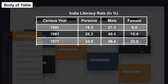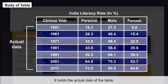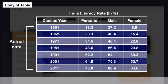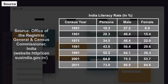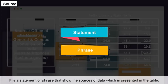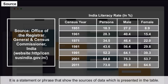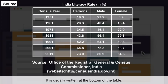Body of Table and Source: The body of the table holds the actual data. The location of any figure in the table is fixed and determined by its row and column. The source is a statement or phrase showing the origin of the data presented, and is usually written at the bottom of the table.